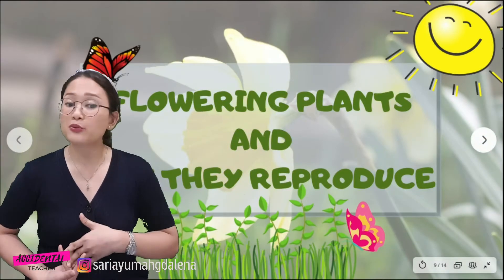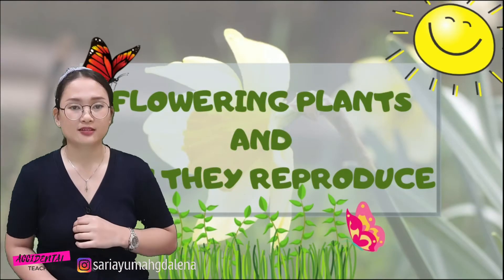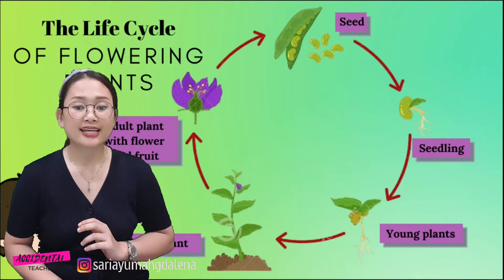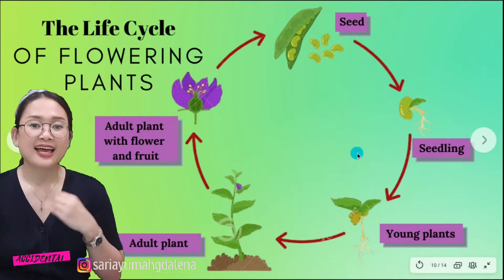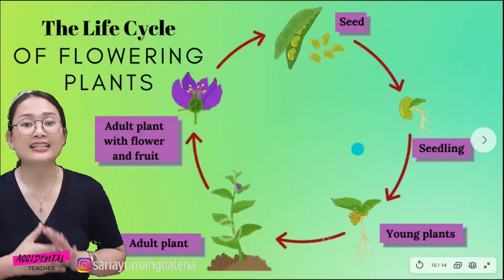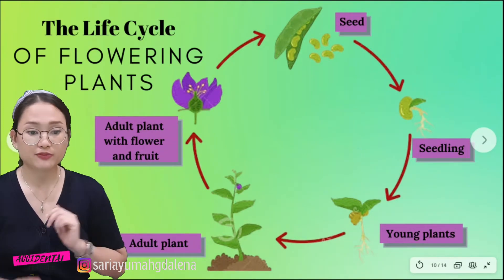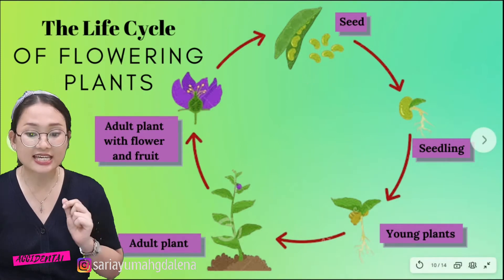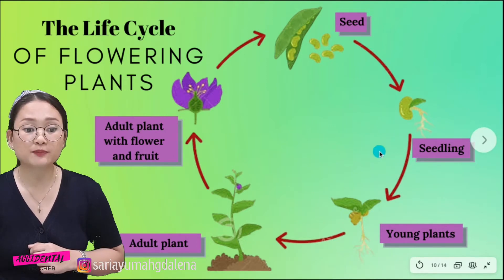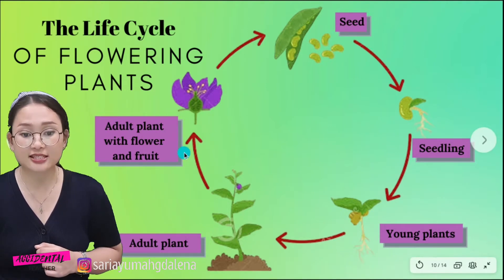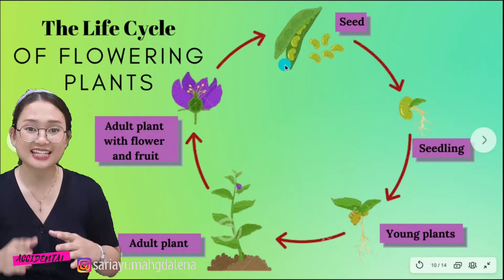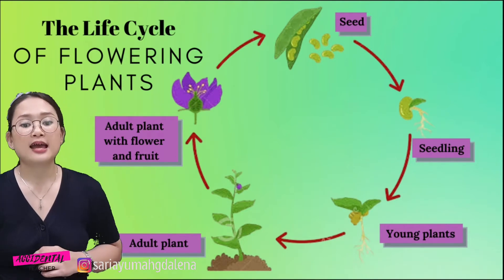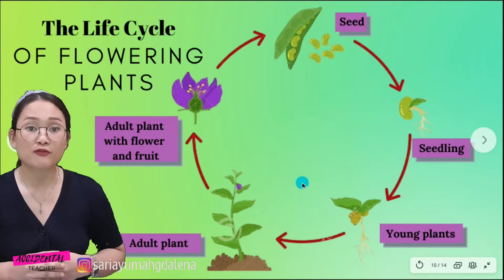Now we are going to talk about flowering plants and how they reproduce. A life cycle is a process starting from when a living creature enters life until it dies. The flowering plant starts from the seed, becomes a seedling, then a young plant, then an adult plant with flowers and fruit, and produces seeds. While the adult plant will die, the seed will produce another plant — and that is the life cycle of flowering plants.